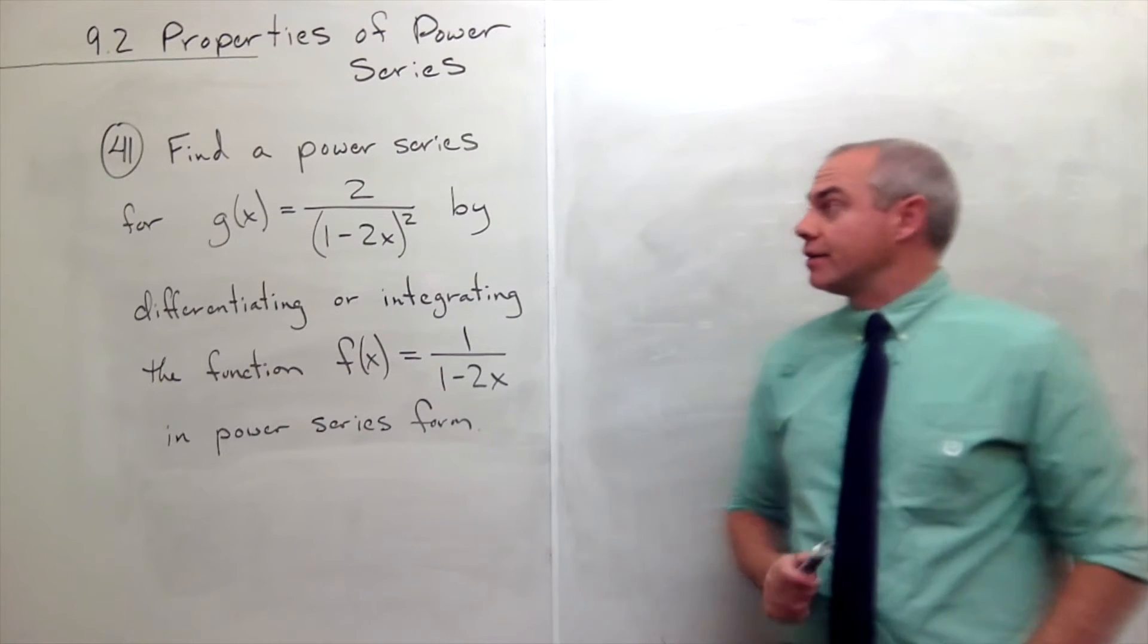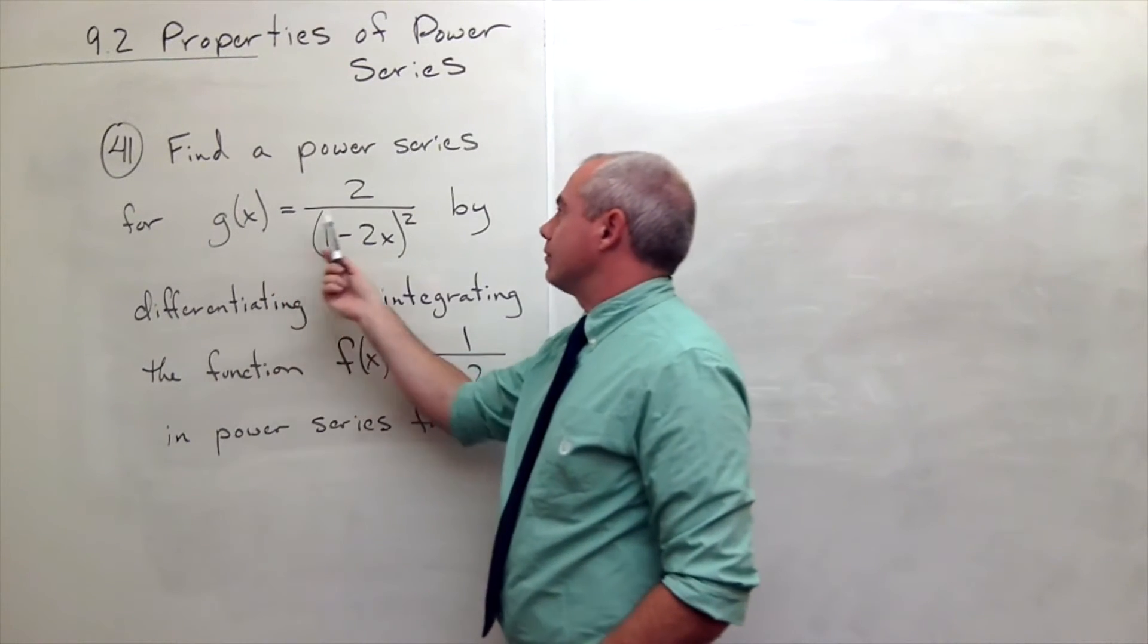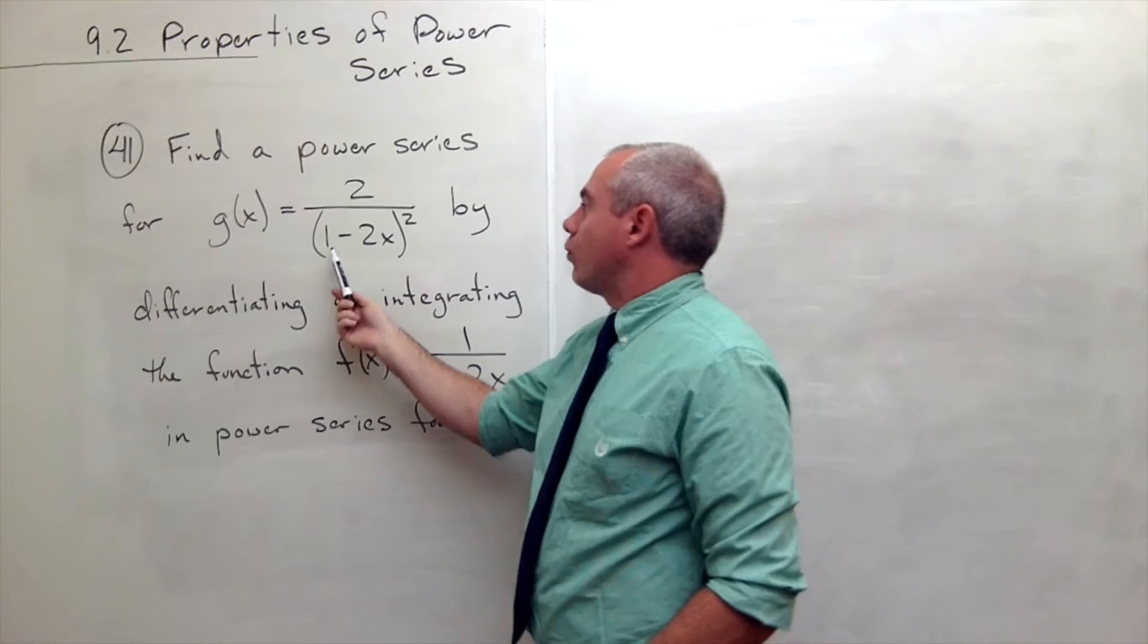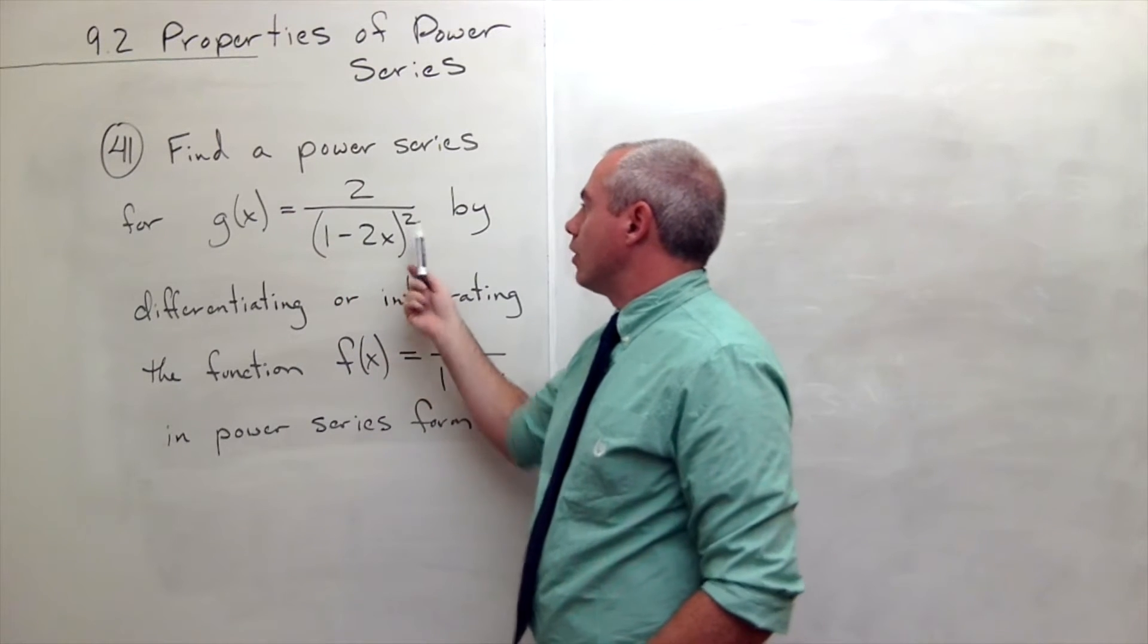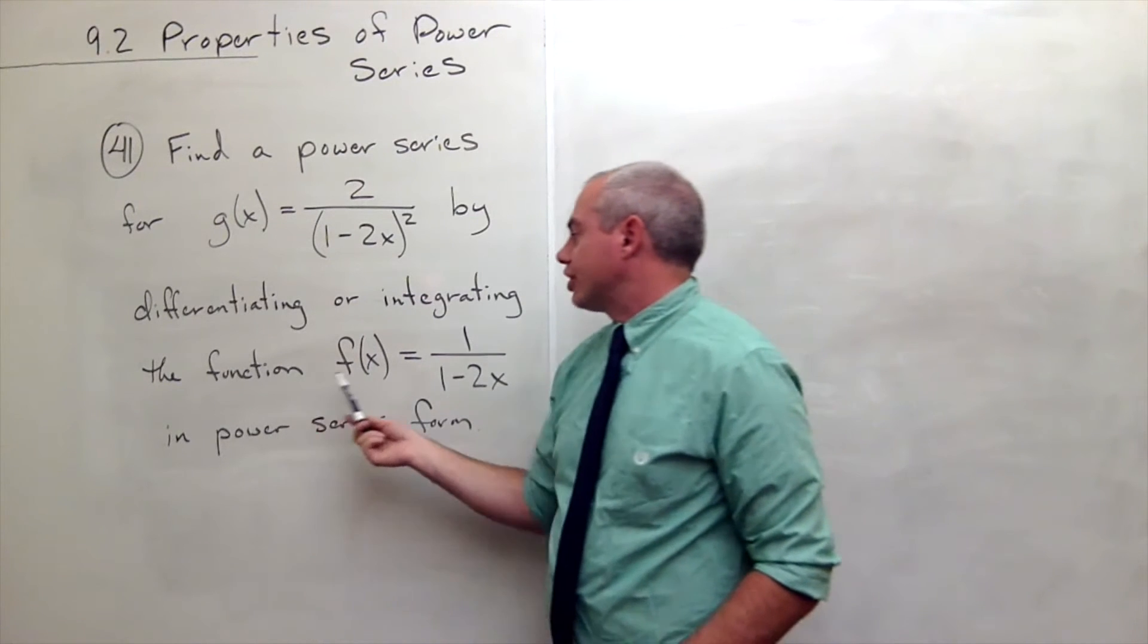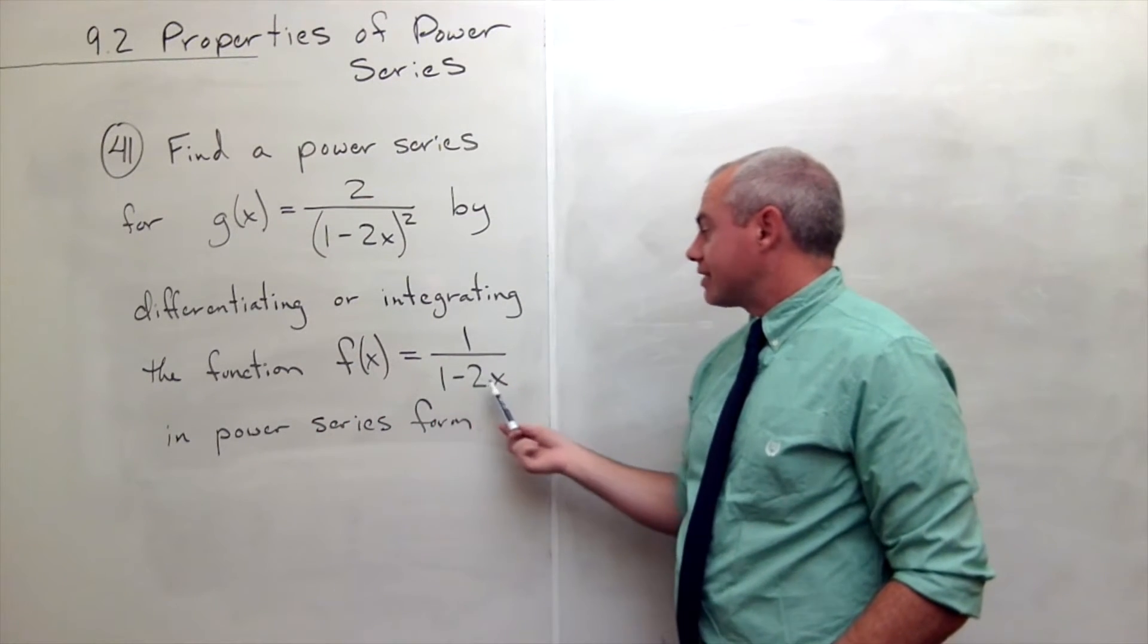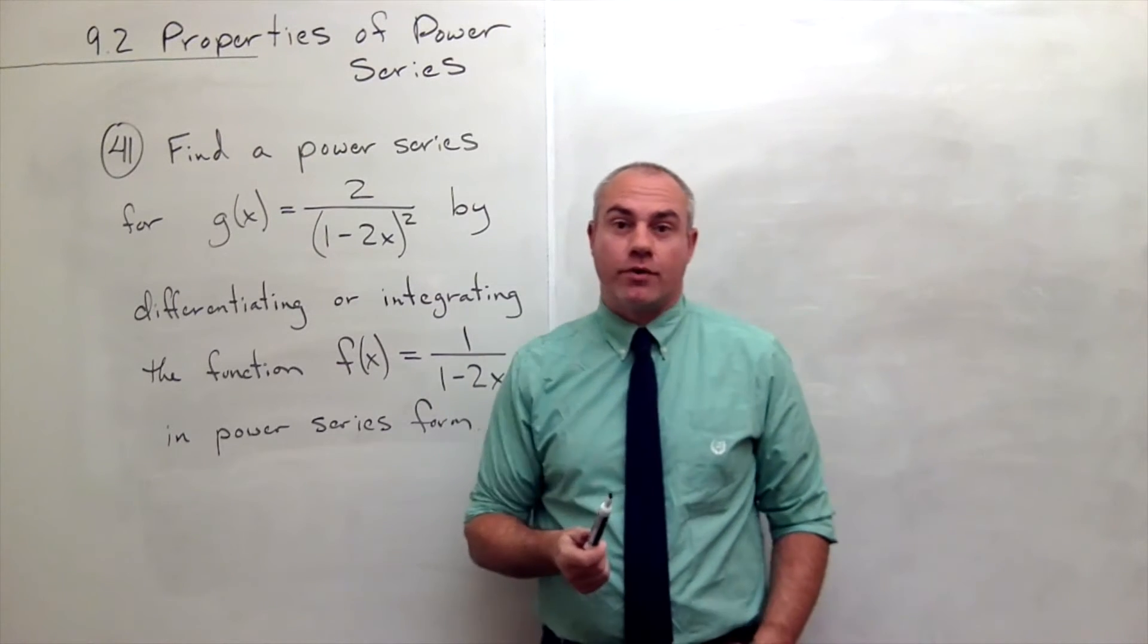In problem number 41 we'd like to find a power series for g(x) equals 2 divided by 1 minus 2x quantity squared by differentiating or integrating the function f(x) equal to 1 over 1 minus 2x in power series form.